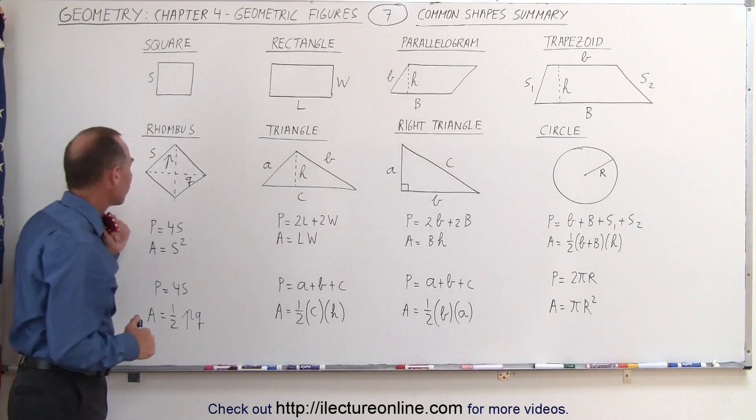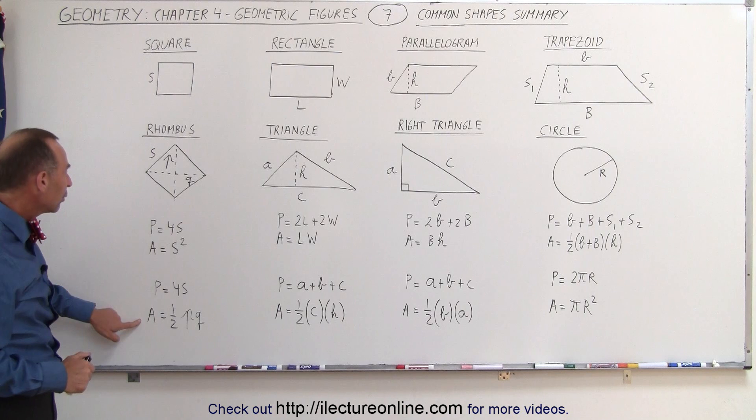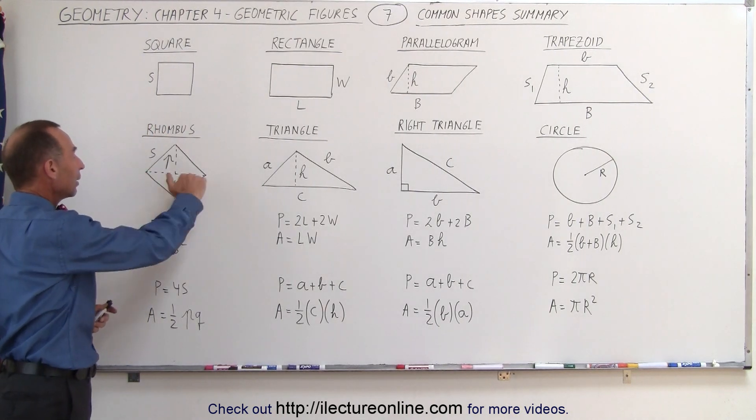And coming over here, we have the rhombus. The perimeter of the rhombus is four times a side, and the area would be one-half the product of the two diagonals p and q.